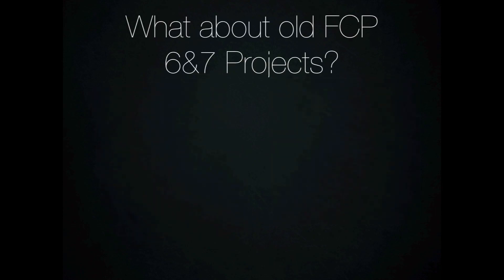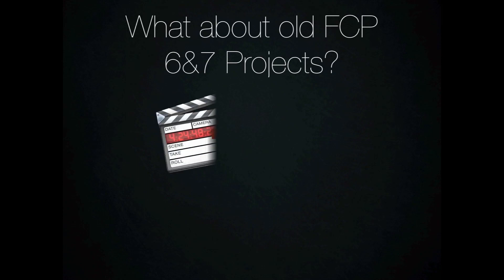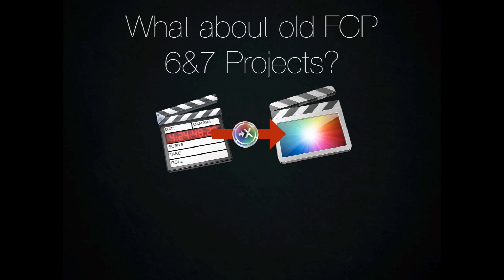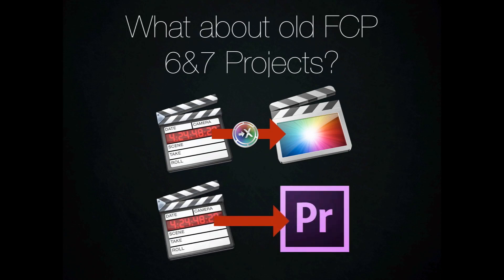Another question you might be asking is: what about old Final Cut Pro 6 and 7 projects? Don't worry. When Final Cut Pro 10 first came out, there was a major complaint that you couldn't upgrade projects from FCP 6 or 7. There is a small $10 application called X to 7 and 7 to X that allows you to go back and forth between the two. Adobe Premiere Pro also supports importing Final Cut Pro 7's XML format, so it can automatically import the footage right away.